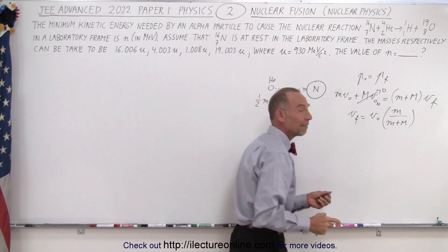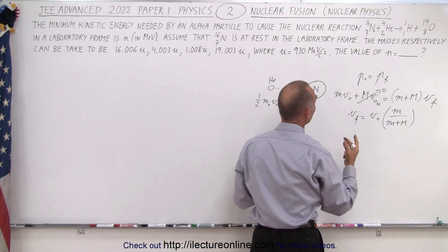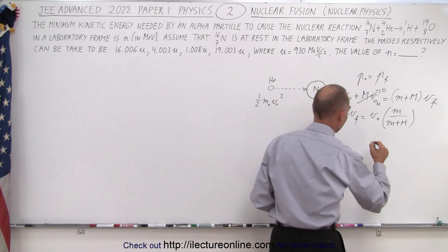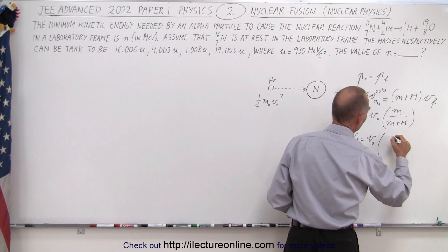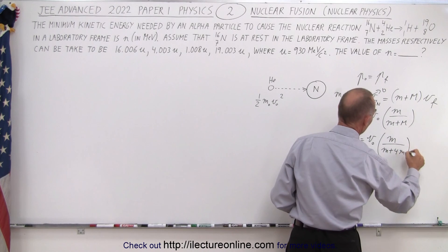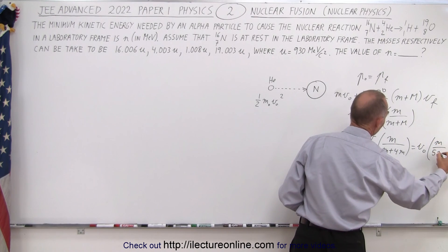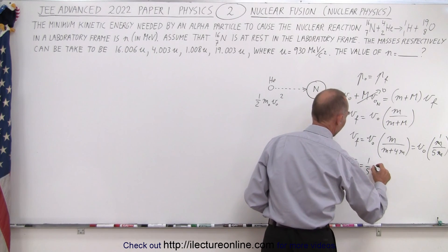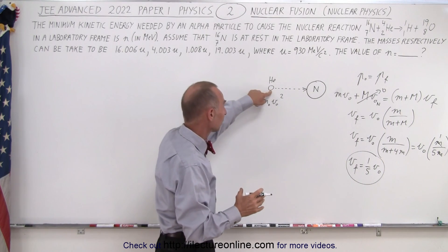Here, little m is the mass of the helium alpha particle and big M is the mass of the nitrogen. The mass of nitrogen is approximately four times the mass of helium, so V-final equals V-initial times M divided by (M plus 4M), which is M divided by 5M. The M's cancel, giving V-final equals one-fifth V-initial.